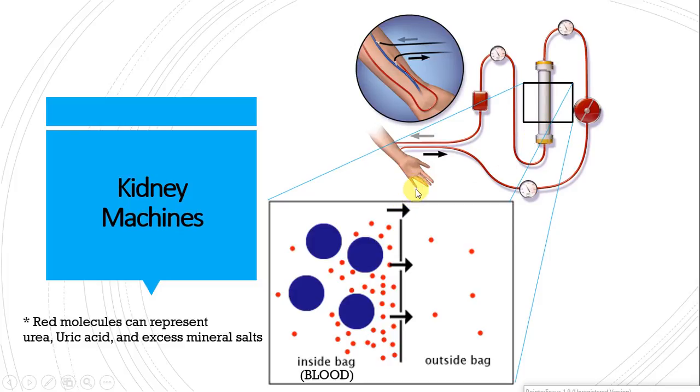And things like urea, uric acid, and excess mineral salts, all that sort of stuff, they usually get excreted by the kidneys. So if the kidneys are dysfunctional or not working, these people need to get the waste out somehow. So the kidney machines here basically fill that role.